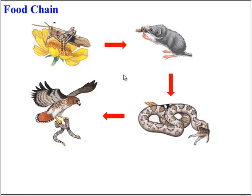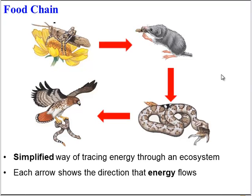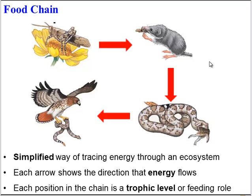For energy flow, we're going to focus on how energy moves through the living parts of an ecosystem, and we can show this using a food chain. In this food chain we have a simplified way of tracing energy through an ecosystem. The arrows show the direction that energy moves — this organism is being eaten by this organism, so energy is moving from this organism into this organism. Energy flows from the mouse to the snake, and then from the snake to the hawk. Each of these positions in the food chain is known as a trophic level, or feeding role. Troph always refers to food.